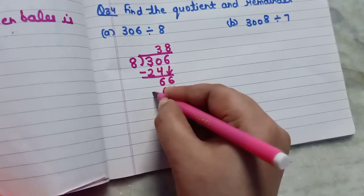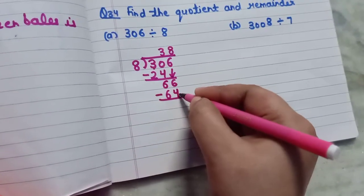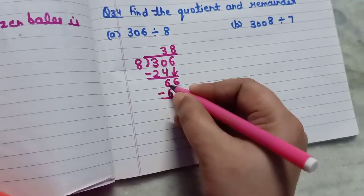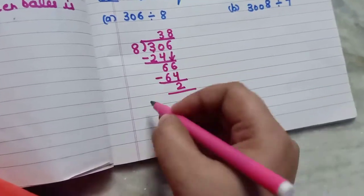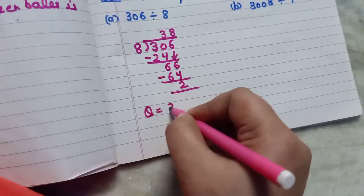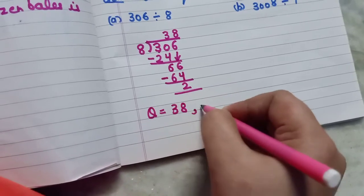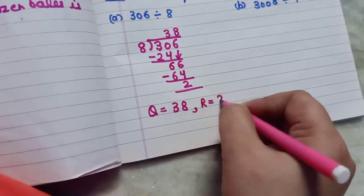Now again what you will do? You will subtract them. 6 minus 4 will be equal to 2, and 6 minus 6 will be equal to 0 only. So here your quotient is equal to 38 and your remainder will be equal to 2.